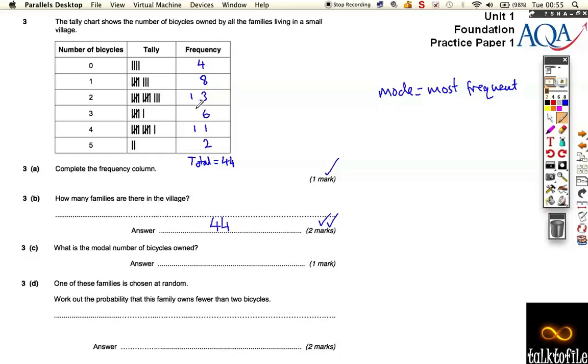So let's have a look, the biggest one is 13 wasn't the most frequent, so the modal number of bicycles was 2, because most families own 2 more than any other number of bicycles.